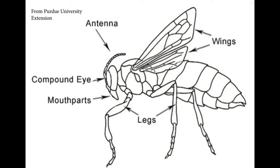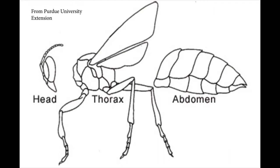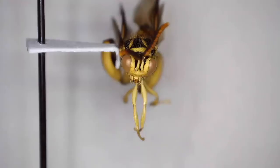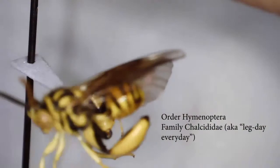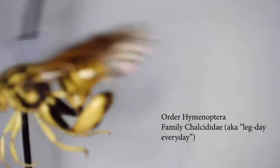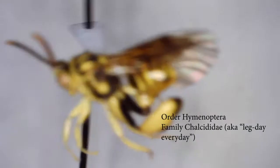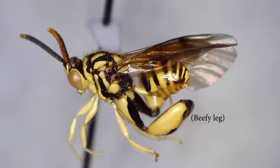While insects have pretty complicated body parts, I'm going to start us with the three simple ones: the head, the thorax, and the abdomen — the three basic divisions of an insect body plan. We're going to start with an insect that belongs to the family Chalcitidae, which I also know as the leg day everyday wasps because of these exceptionally beefy back legs that they have. But it's easy to recognize the segments. You have the head, the thorax, and the abdomen. Pretty simple in this example.